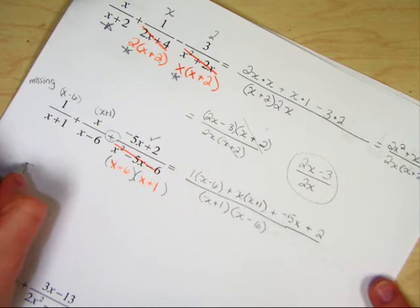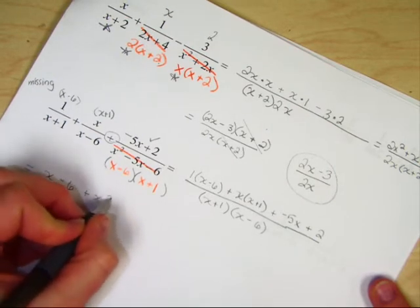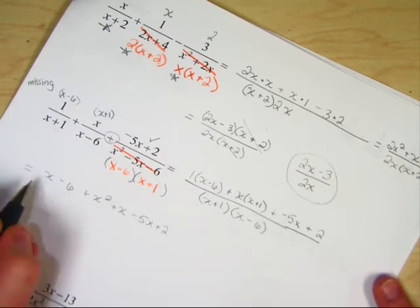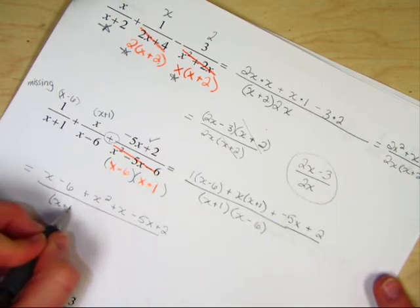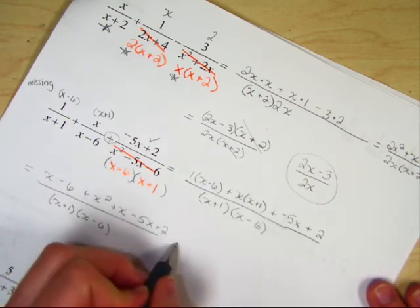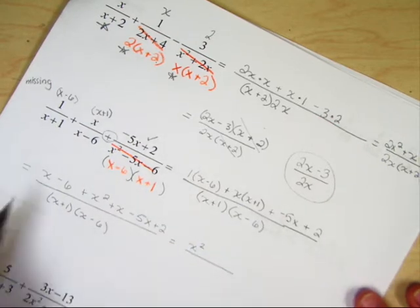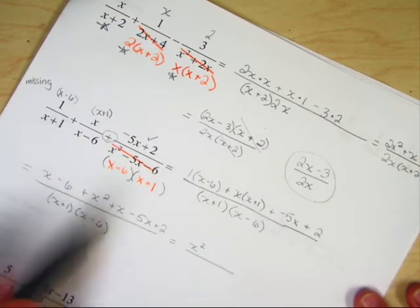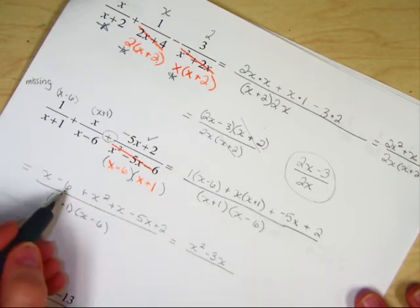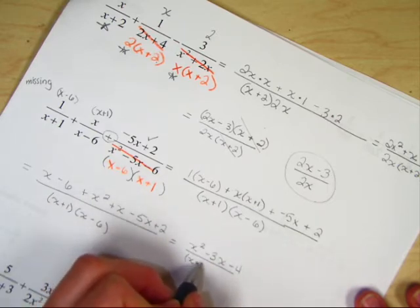Now we'll multiply the top together. That's going to give me 1x minus 6 plus x squared plus x minus 5x plus 2 over my common denominator of x plus 1, x minus 6. Combine your like terms in the numerator and put them in order. That's x squared. Now let's see how many x's we have. 1, 2, minus 5 is minus 3x. Now let's do our constants. Negative 6 and 2 is minus 4 over x plus 1, x minus 6.